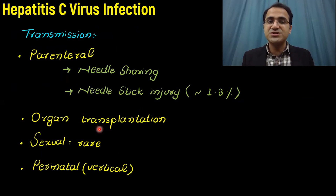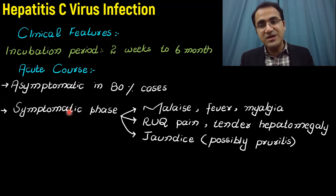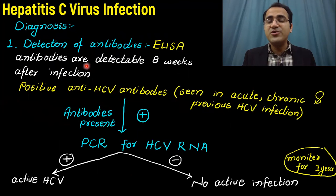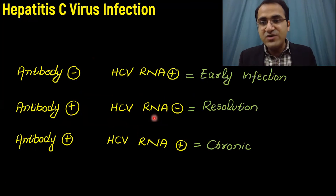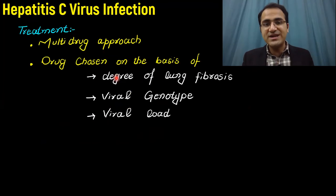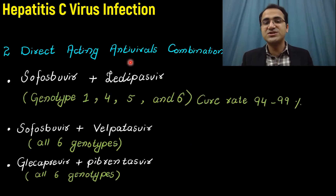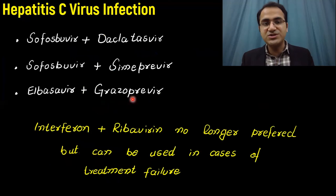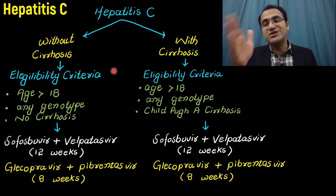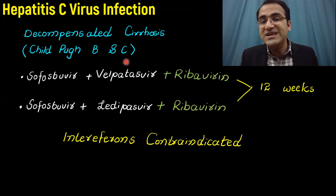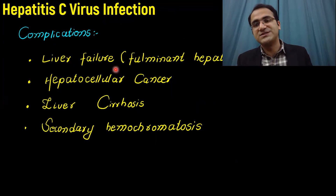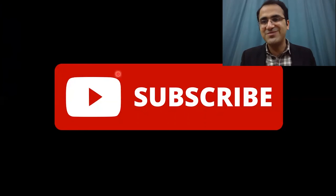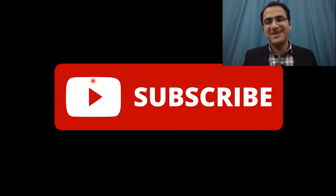In summary, we covered acute and chronic HCV infection, transmission, clinical course, symptoms, diagnosis via ELISA, PCR, and liver function tests, serology interpretation, treatment goals, sofosbuvir-based combination regimens, cirrhosis-based treatment adjustments including Child-Pugh B and C, contraindications, and complications of hepatitis C virus. Please subscribe and check out other videos in the infectious medicine playlist.